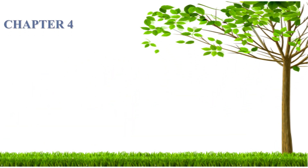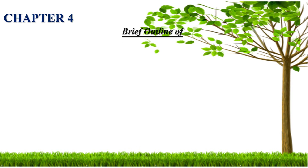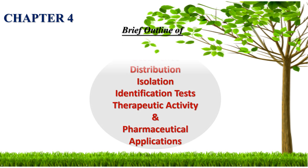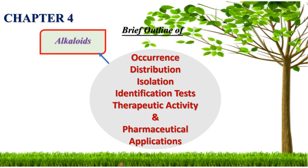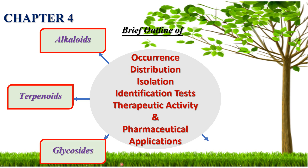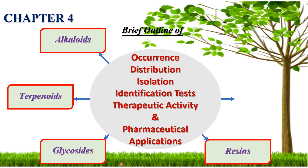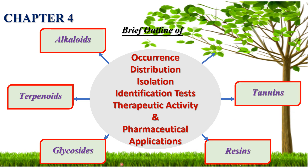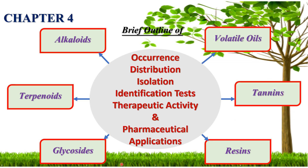Chapter four gives a brief outline of the occurrence, distribution, isolation, identification tests, therapeutic activity, and pharmaceutical applications of the following phytoconstituents: first, alkaloids; then terpenoids; then glycosides; then resins; then tannins; and then volatile oils. These six chemical natures are included in chapter four.